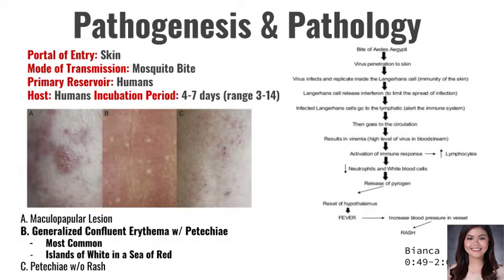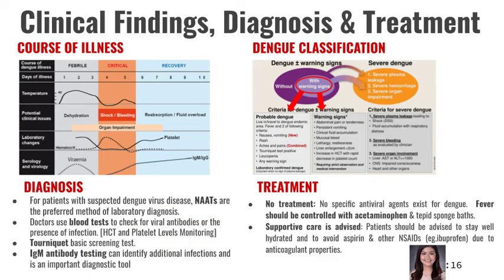As for the pathogenesis and pathology of dengue, its mode of transmission is through a mosquito bite. Dengue fever is known as breakbone fever. It triggers the immune response to reset the hypothalamic set point for fever, which increases pressure in vessels and causes the rash. The classical dengue rash, known as Herman's rash, is presented on image B. The course of illness of dengue includes the febrile, critical, and recovery phases.